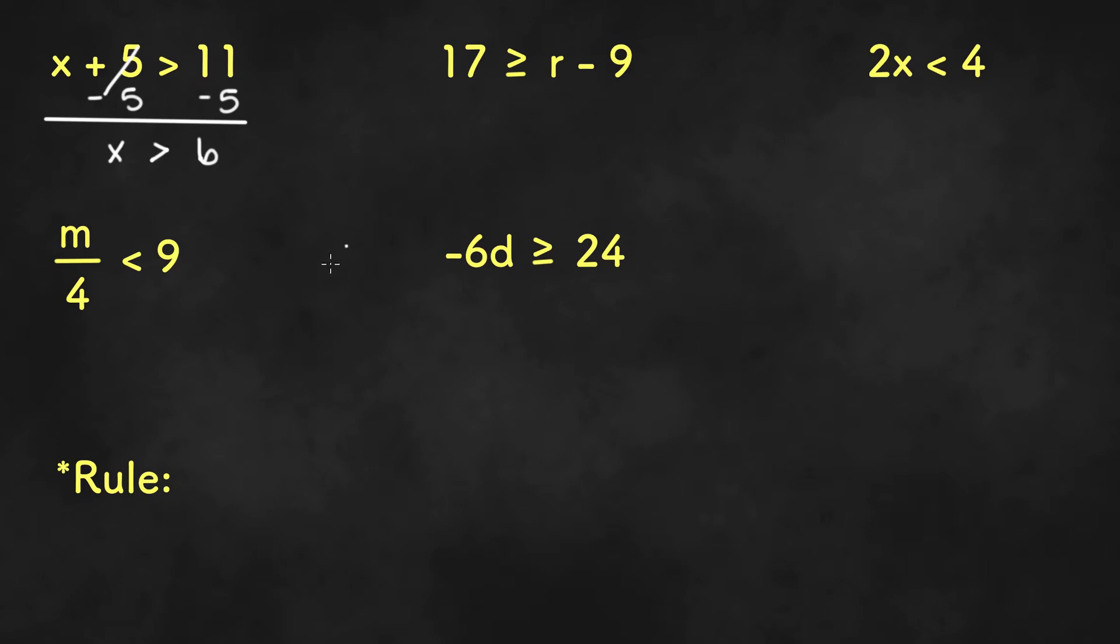Same thing goes for all the inequalities you will be solving besides one rule. Here we can add 9 to both sides to get r by itself. In that case we will be left with 17 plus 9 or 26. Bring down the symbol is greater than or equal to r.